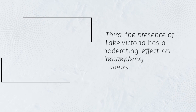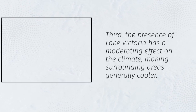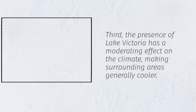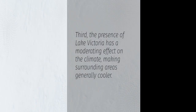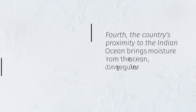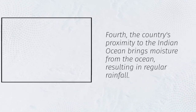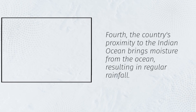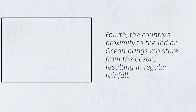Third, the presence of Lake Victoria has a moderating effect on the climate, making surrounding areas generally cooler. Fourth, the country's proximity to the Indian Ocean brings moisture from the ocean, resulting in regular rainfall.